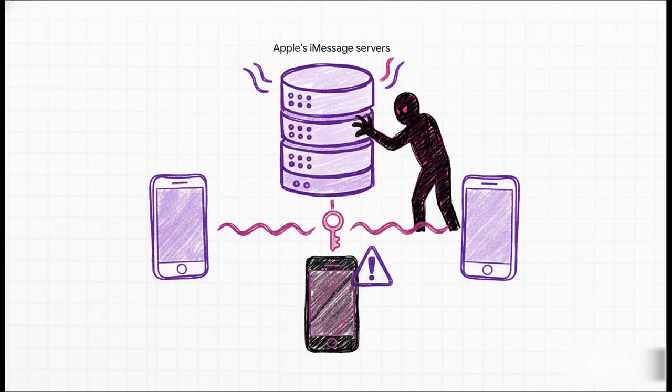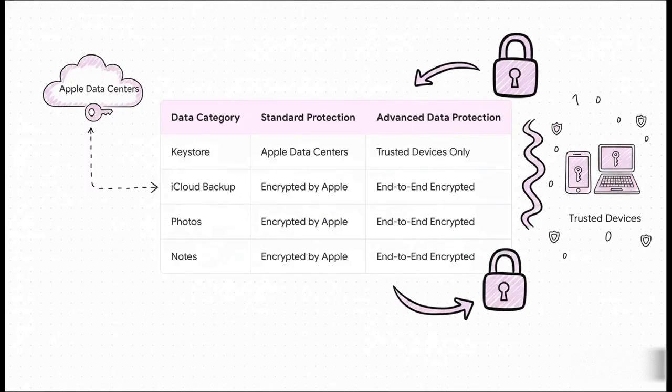This brings us to data protection in iCloud, which is a really big deal. By default, with what Apple calls standard protection, Apple holds the encryption keys in their data centers. But there is an optional mode called Advanced Data Protection, and it fundamentally shifts this model. The crucial difference is that the key store moves from Apple servers to your trusted devices. This extends end-to-end encryption to the vast majority of your iCloud data, including backups and photos, making it cryptographically impossible for Apple to access.